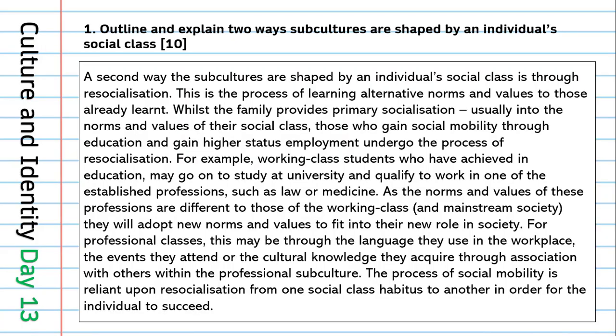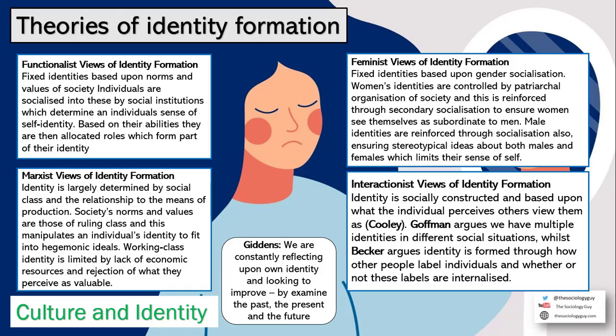Moving to Question 2 on identity formation, several theoretical perspectives apply: functionalist views focus on conforming to the value consensus; Marxist views focus on social class; feminist views focus on gender socialization. Interactionist views include Cooley's looking glass self, Goffman on social roles, and Becker on labelling. You can also draw on Giddens' late modern idea of reflexive reinvention, and postmodern perspectives.